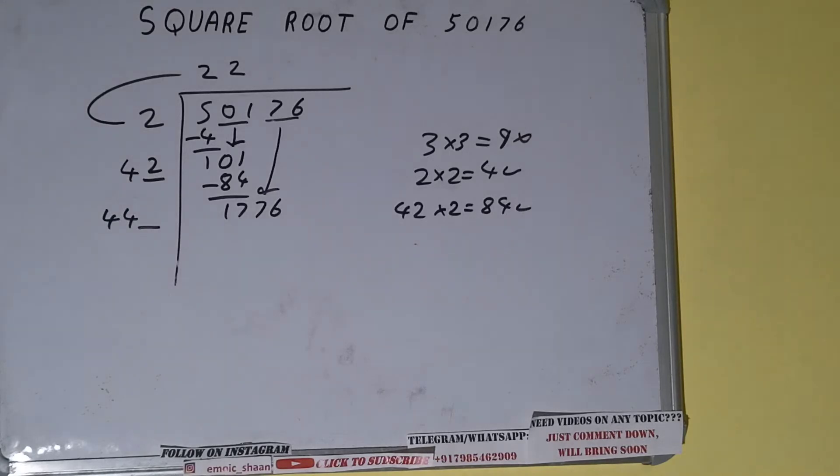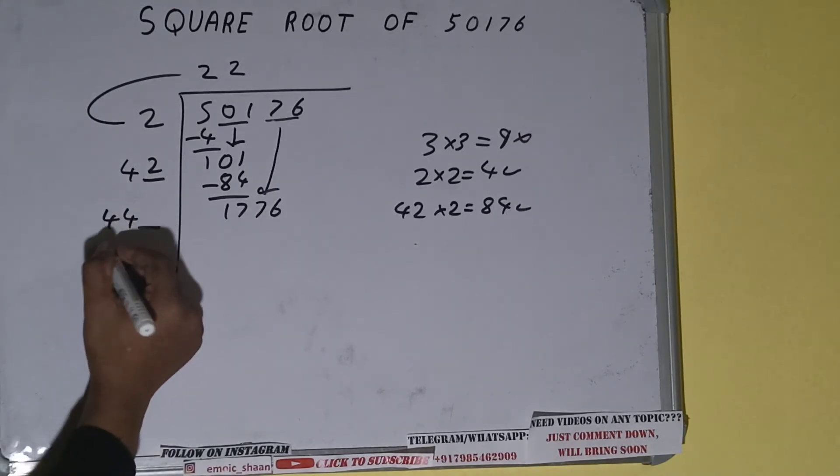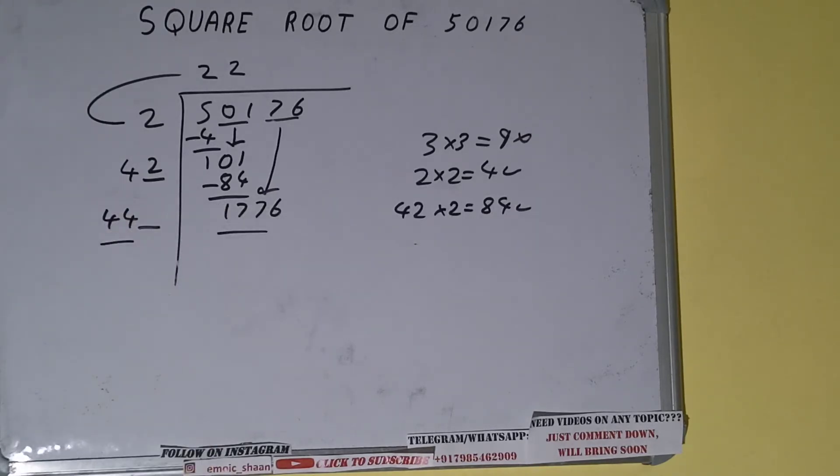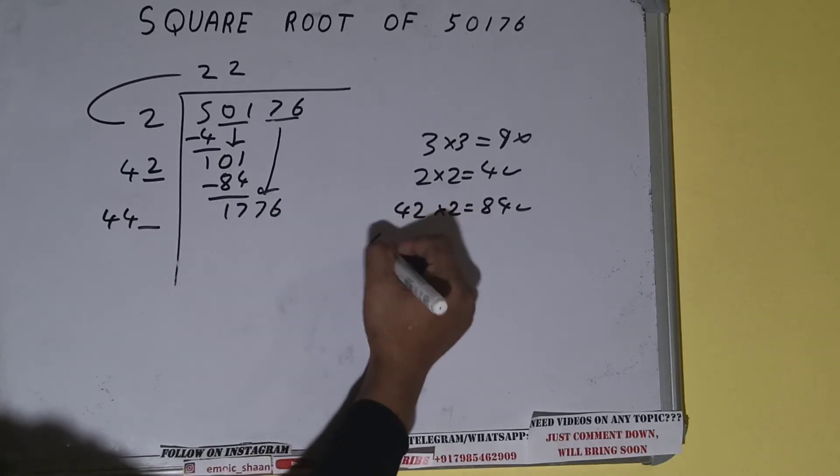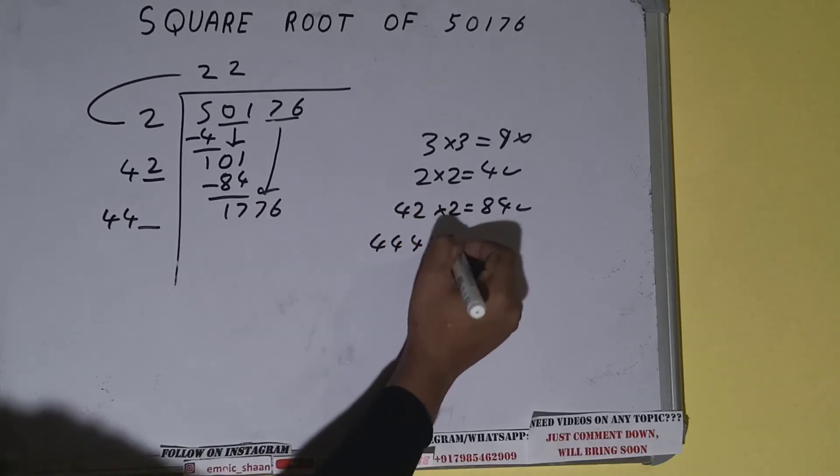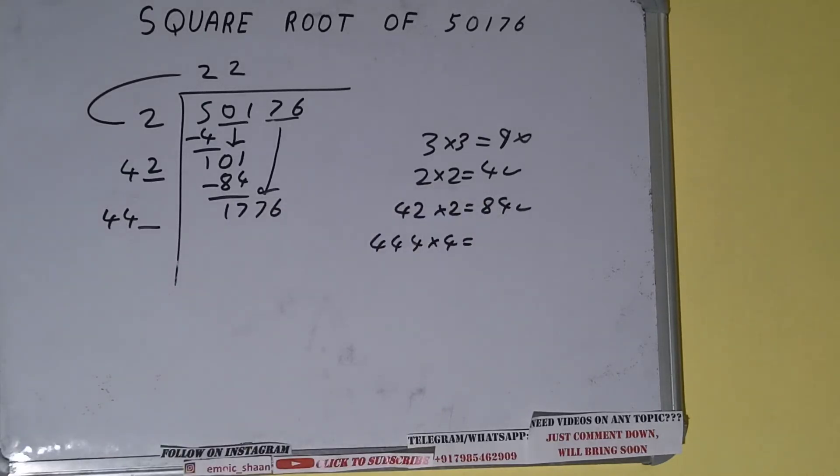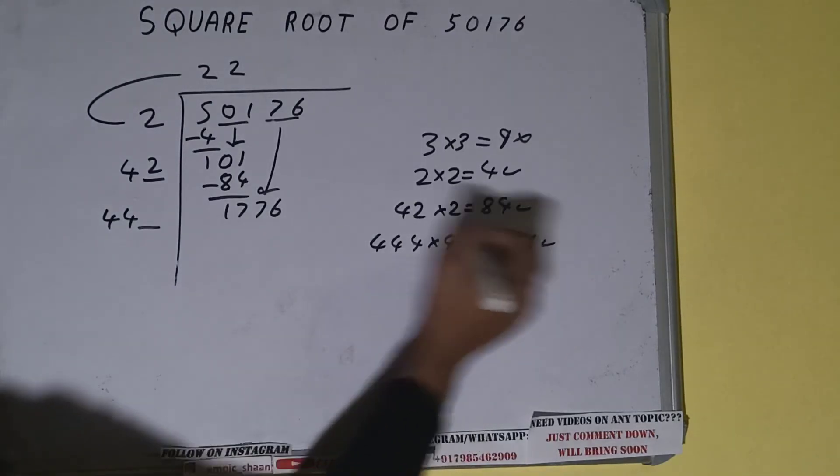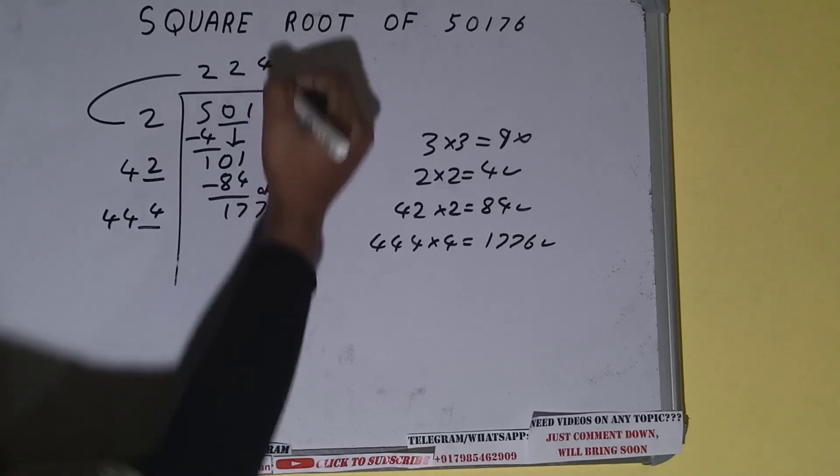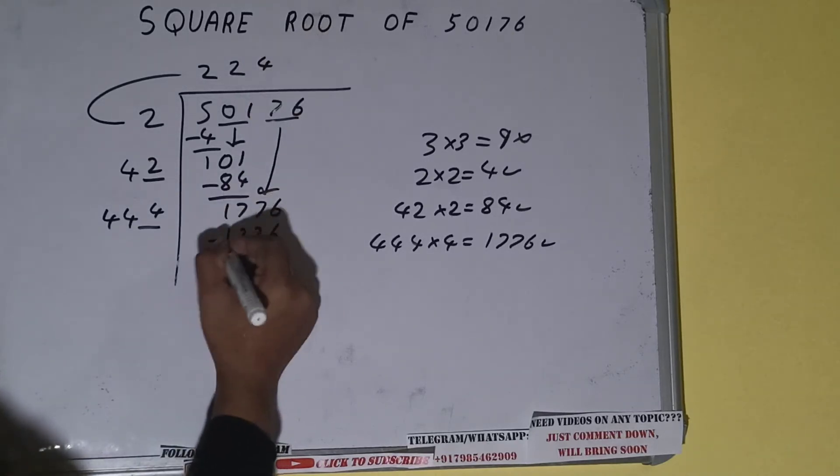Now compare this 44 with this 177. 44×4=176, so we can try 4 times. 444×4, it will be 1776, which is good to take. So 4 here and 4 here, 1776 subtract, and we'll be getting 0. Once we get 0, whatever we have in the quotient will be the answer, that is 224.